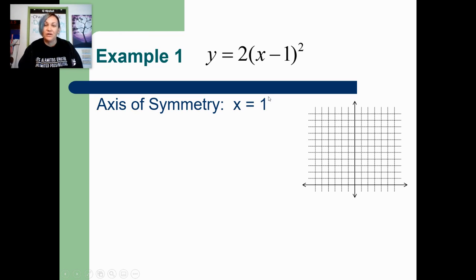For our vertex, our X coordinate will be the 1. And then since there's nothing being added at the end of the problem, our Y coordinate will be 0. So if there's nothing being added or subtracted after the square, then your Y number is 0.